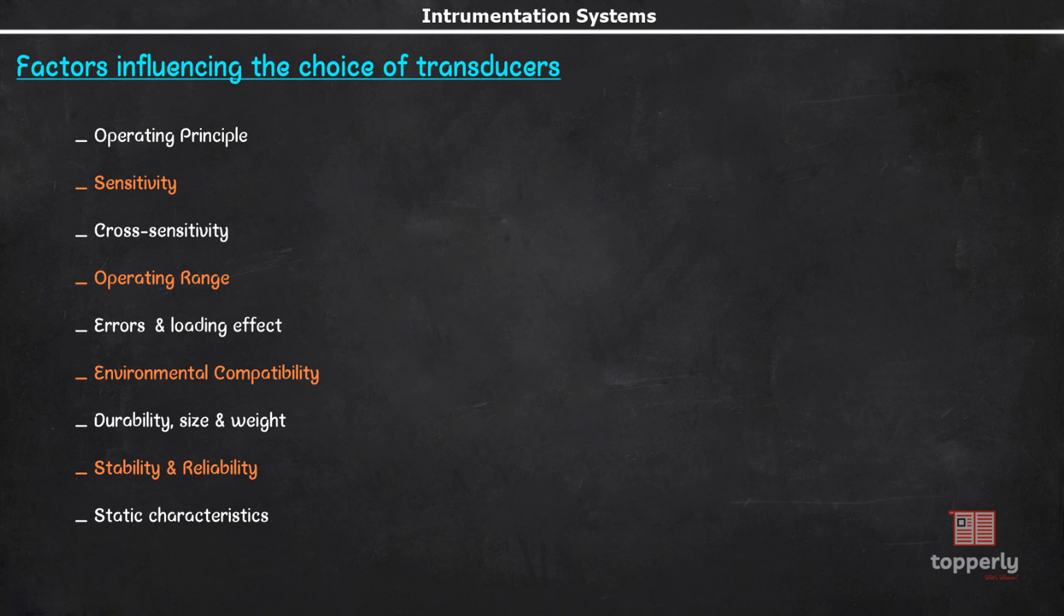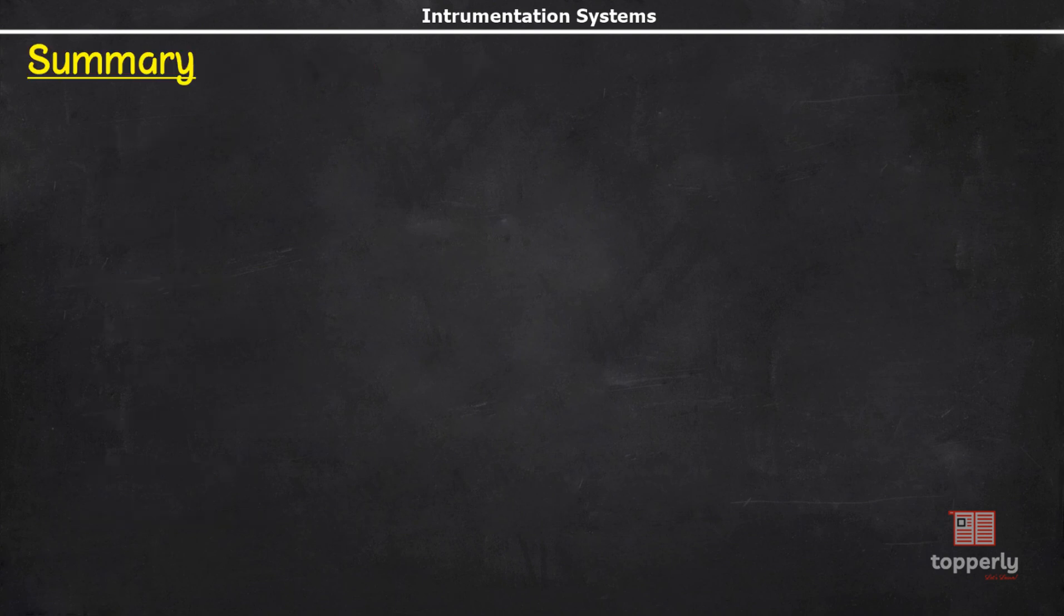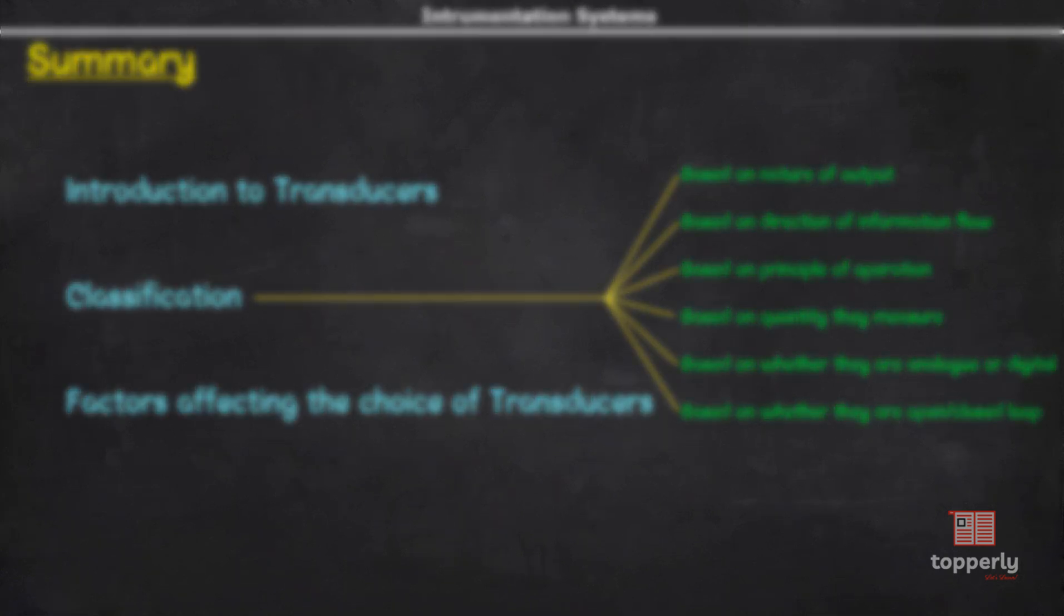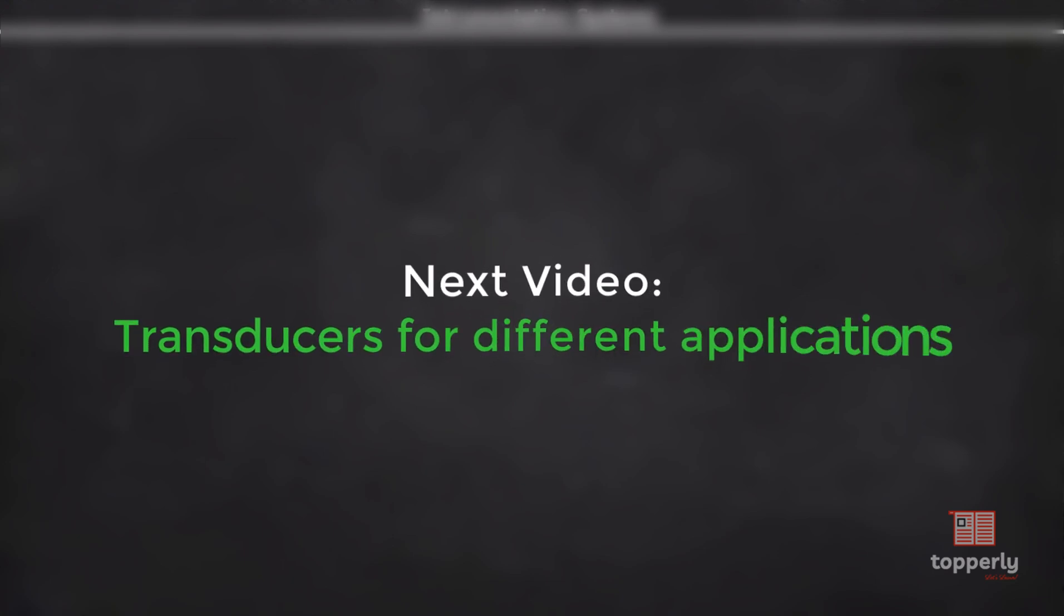So that brings us to the end of our lecture. To summarize, we learned what is a transducer and the need for transducers, how transducers are classified and finally the factors affecting the choice of transducers. If you have any doubt, feel free to ask in the comment section. If you enjoyed the video, please do click the like button and also subscribe to the channel. From the next video onwards, we will be having a detailed description on transducers used for detecting different physical quantities. Thanks for watching and have a nice day.